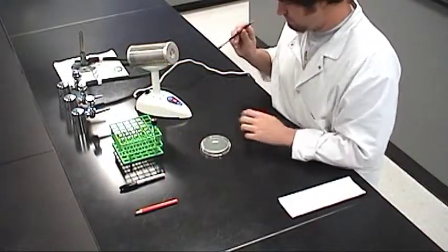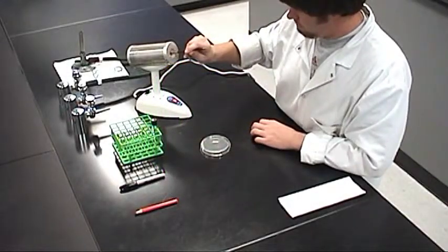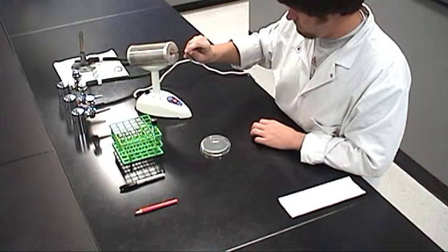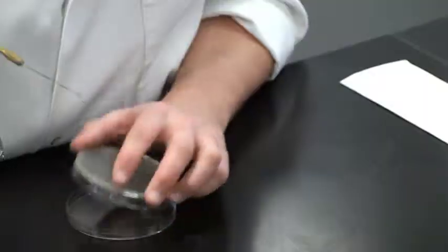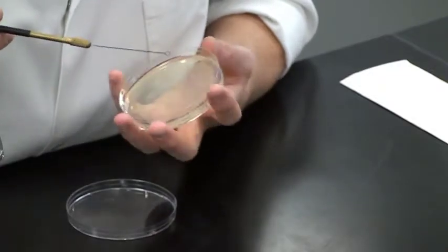Return the plate to its lid and flame the loop. Pick up the plate and rotate it for the last quadrant.